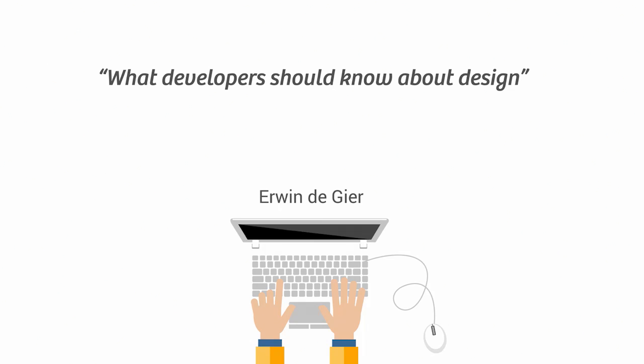Imagine for a moment we are all software developers working on an application. There was a designer involved but she has left and the client wants a new feature — maybe a form, some text inputs and a button. What do we do? How do we decide where to place the text, how big will the text be, where do we put the buttons or the forms? Even as a developer we have a lot of design decisions to make.